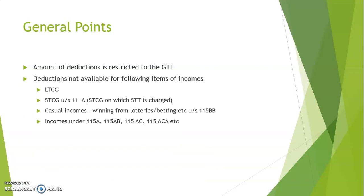There are certain items of income for which we cannot take deductions: LTCG, STCG under section 111A, casual income, winnings from lotteries and betting — that is section 115BB — and certain incomes under section 115A, B, C, etc. An easy way to remember: whatever income has a fixed amount of tax rate cannot be utilized for deductions. LTCG has a fixed rate of tax; STCG under 111A has a fixed rate; lottery winnings have a fixed rate of 30%. So regardless of whatever deductions we have, we will have to pay tax for these items. The following table will clarify this further.